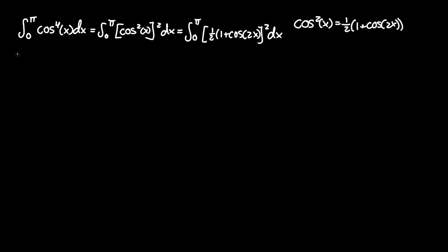We can move the 1/2 to the front, but don't forget to square it when taking it out of the parenthesis. That becomes (1/2)² which is 1/4 times the integral from 0 to π of (1 + cos(2x))² dx.